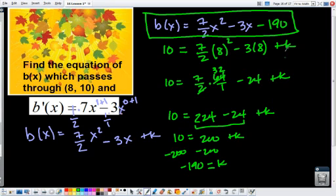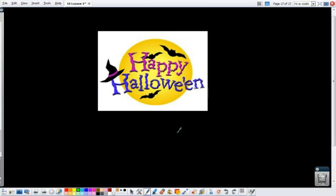I also want to note that, you know, both of these examples, the k term was negative. That's not always the case. It just happened to be that the numbers worked out this way. Okay, so that is all for this screencast. And to end our Halloween theme, happy Halloween to you. See you in class on Friday.